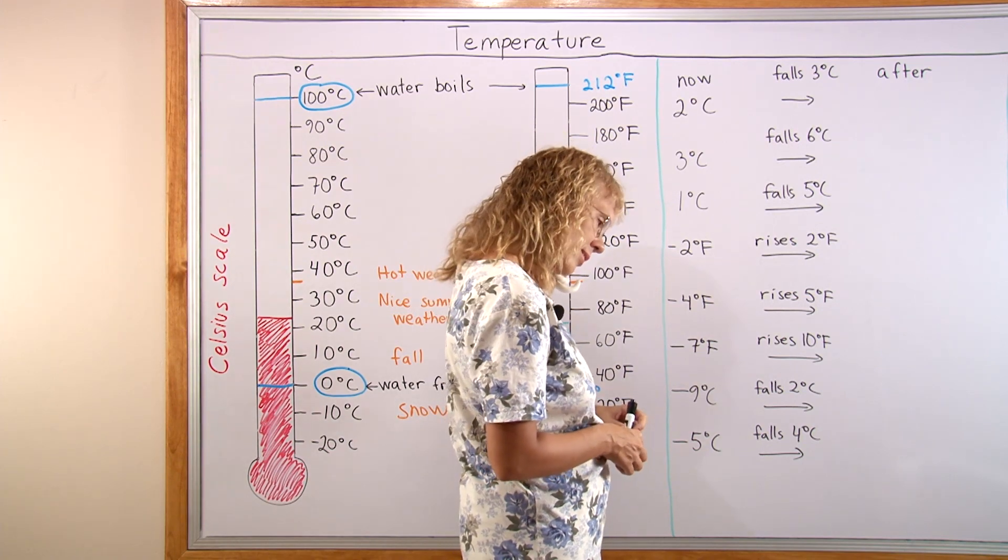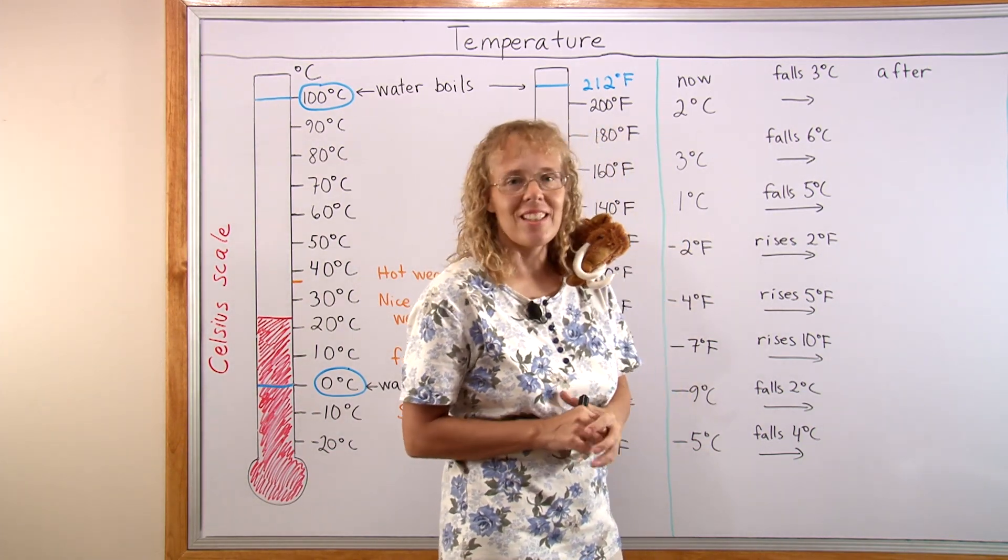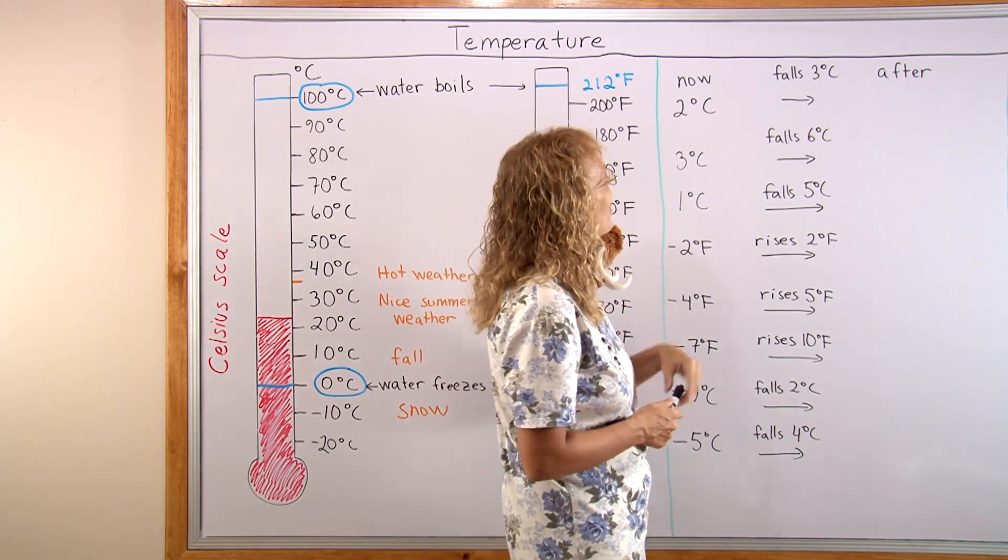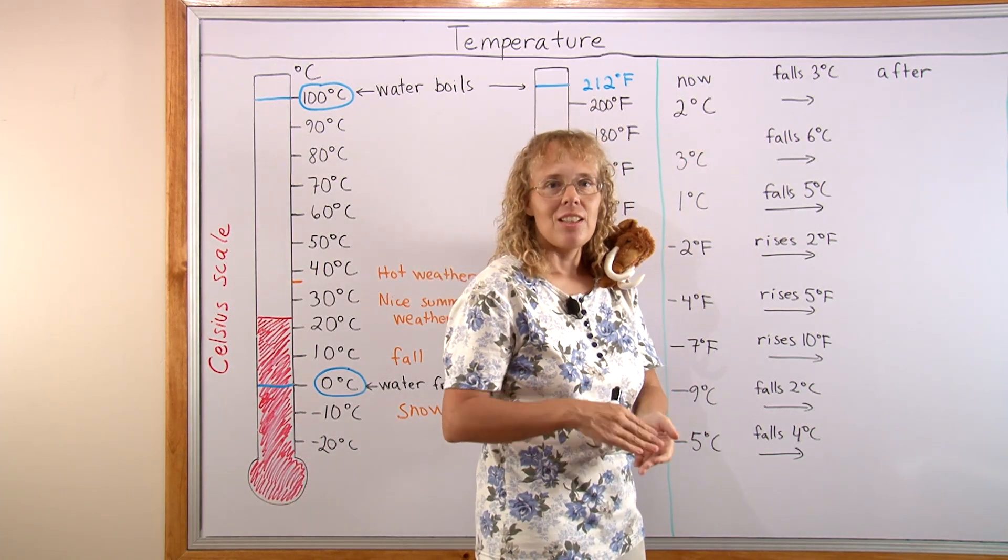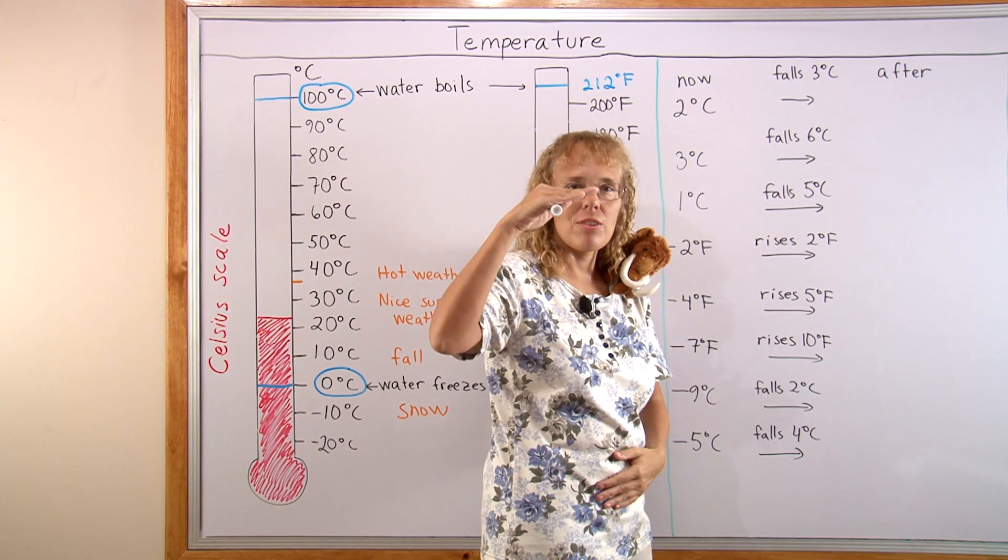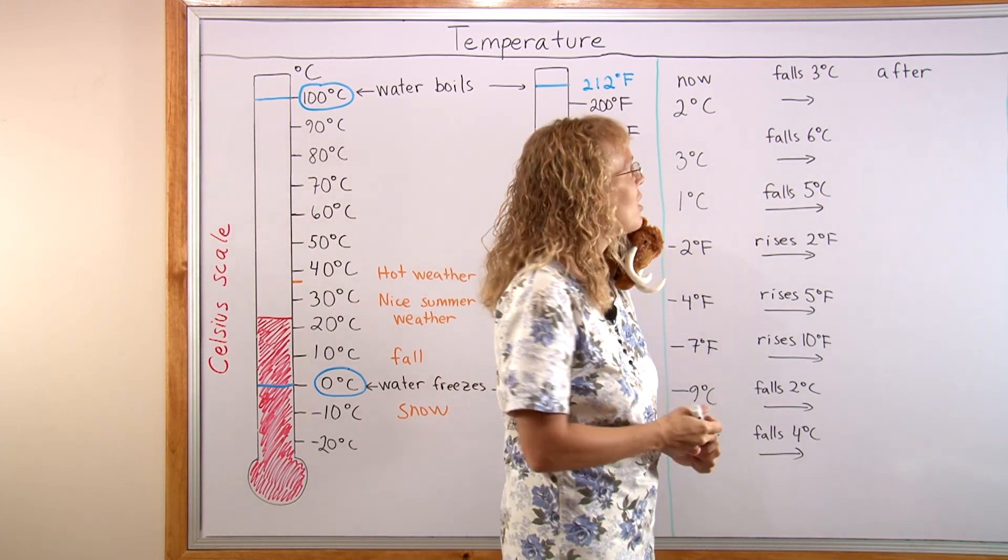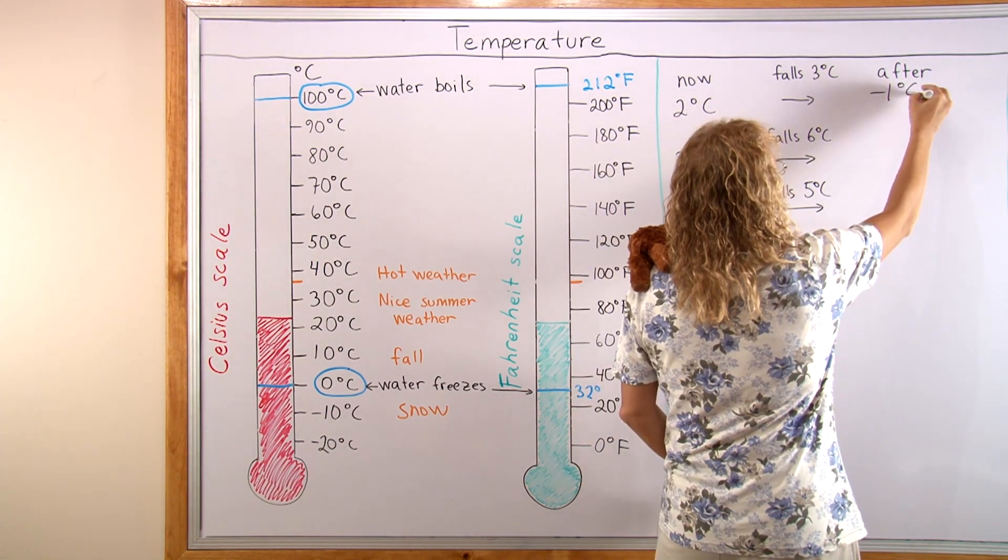What is it Mathi? Mathi is saying he doesn't mind that at all. He has lots of fur and can keep warm. Well, it is 2 degrees Celsius and it falls 3 degrees. If it is 2 degrees and it falls 3 degrees, it goes just 1 degree below 0. So we write minus 1 degree Celsius.